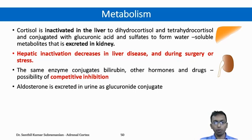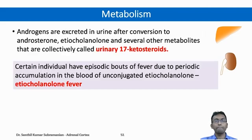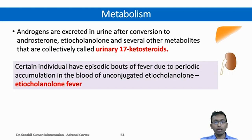The enzymes that conjugate cortisol also conjugate bilirubin, other hormones, and drugs. So there is a possibility of competitive inhibition — when concentration of bilirubin, hormones, and other drugs increases, the availability of the enzyme for conjugating cortisol may decrease, which can also increase plasma levels of cortisol. Aldosterone is also excreted in urine as a glucuronide conjugate. The adrenal androgens are excreted in the urine after conversion to androsterone, etiocholanolone, and other metabolites collectively called urinary 17-ketosteroids. Episodic bouts of fever due to periodic accumulation of unconjugated etiocholanolone is called etiocholanolone fever.